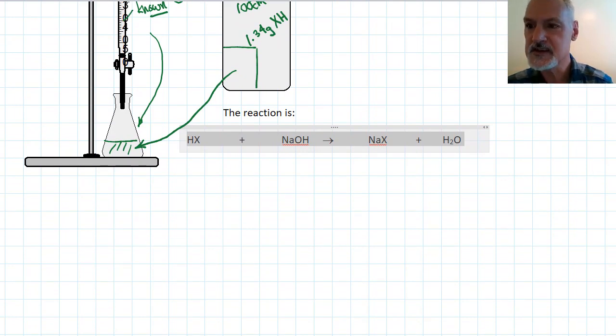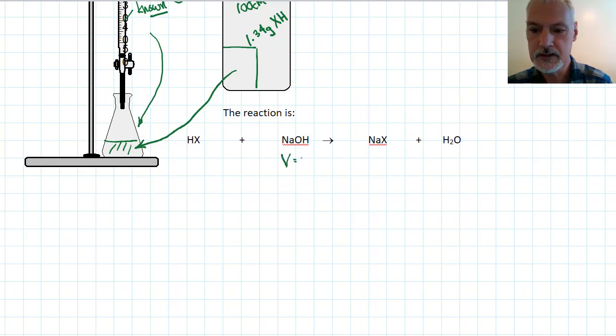We're going to place some of our given information here. The NaOH volume we put in was 23.3 cubic centimeters, which we're going to convert right away into decimeters by dividing by 1,000, giving 0.0233 decimeters cubed.